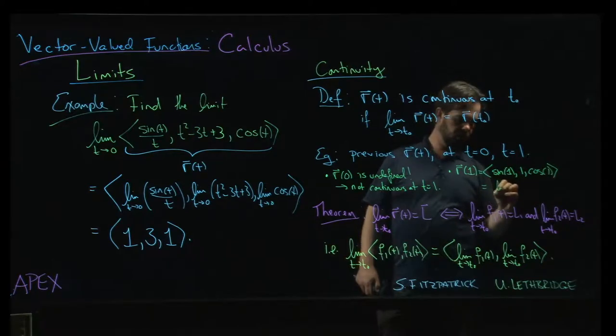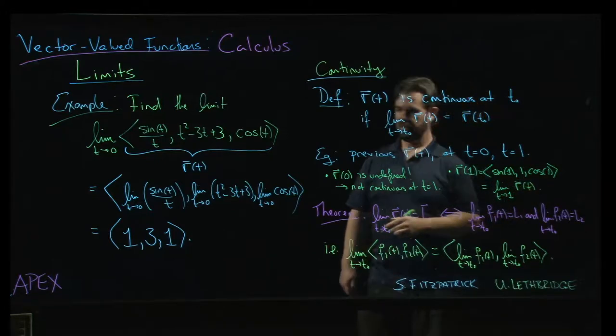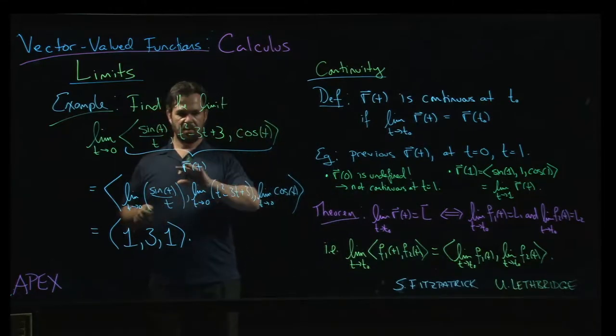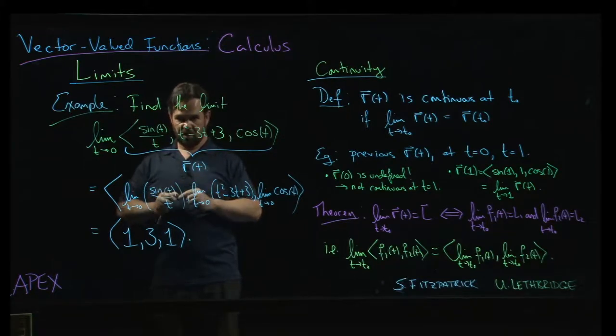And, of course, that is exactly what I would get if I take the limit as t approaches 1 of r of t. If I was going to do that limit with t approaching 1, I can do it everywhere by direct substitution because each of these individual functions are continuous.